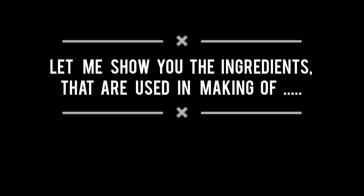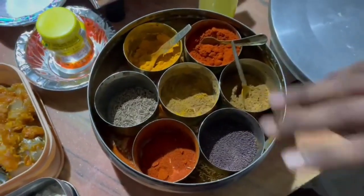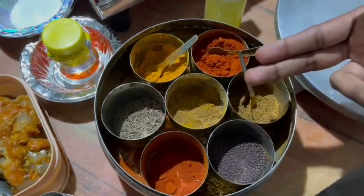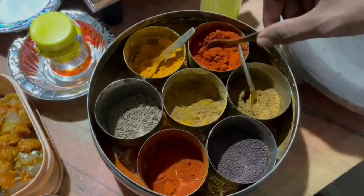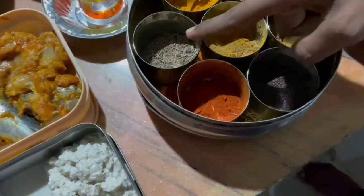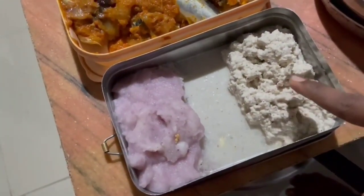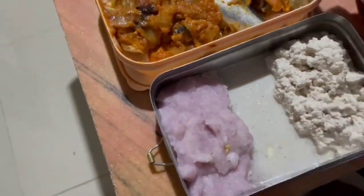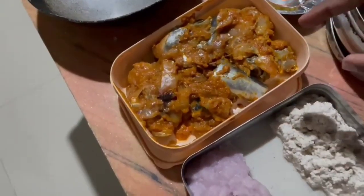Let me show you the ingredients used in making the Goan fish thali. These are our ingredients — nothing special, just regular masalas. This is red chili powder, this is garam masala, this is rye and this is jeera. This is coconut paste, this is gillet nareal paste, this is onion paste, this is fish marinate paste, and this is kalwan paste.